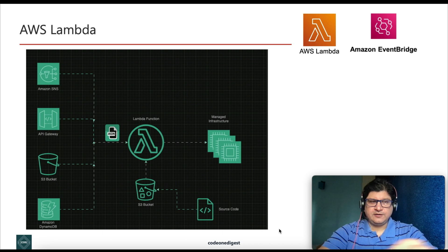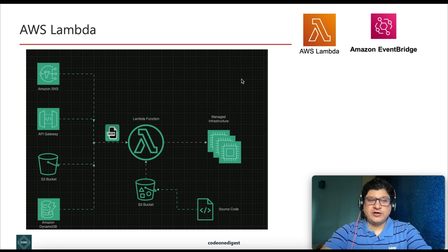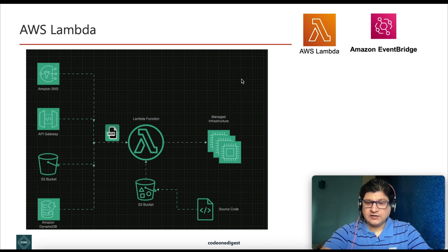AWS Lambda is an event-driven, serverless compute service provided by Amazon as part of Amazon Web Services. It is designed to enable developers to run code without provisioning or managing servers. It executes code in response to events and automatically manages the computing resources required. You do not need to worry about infrastructure, hardware, or scaling — it handles all of that automatically.